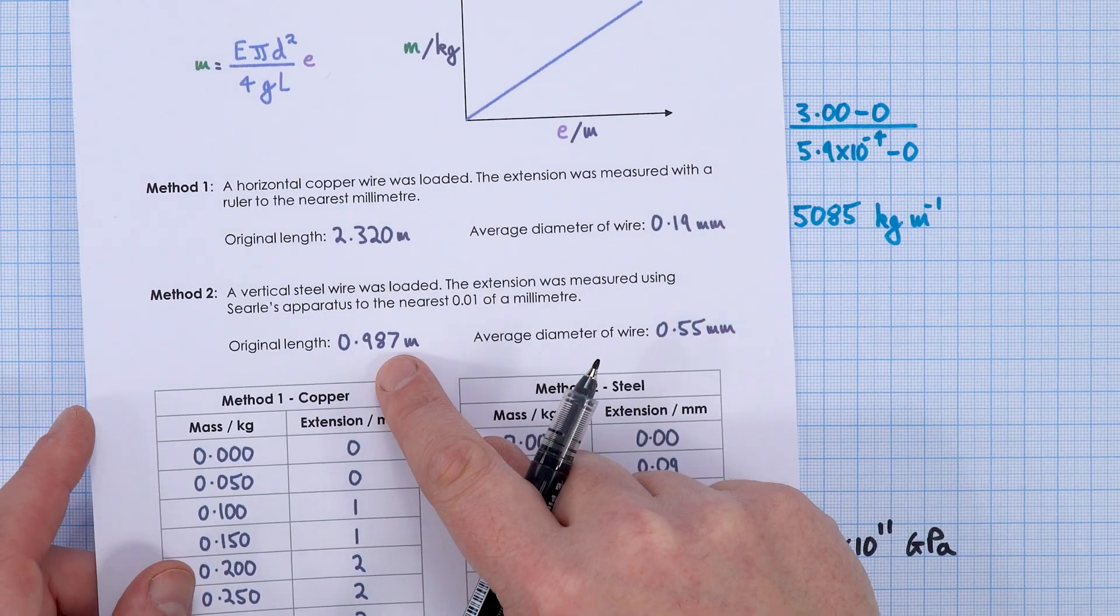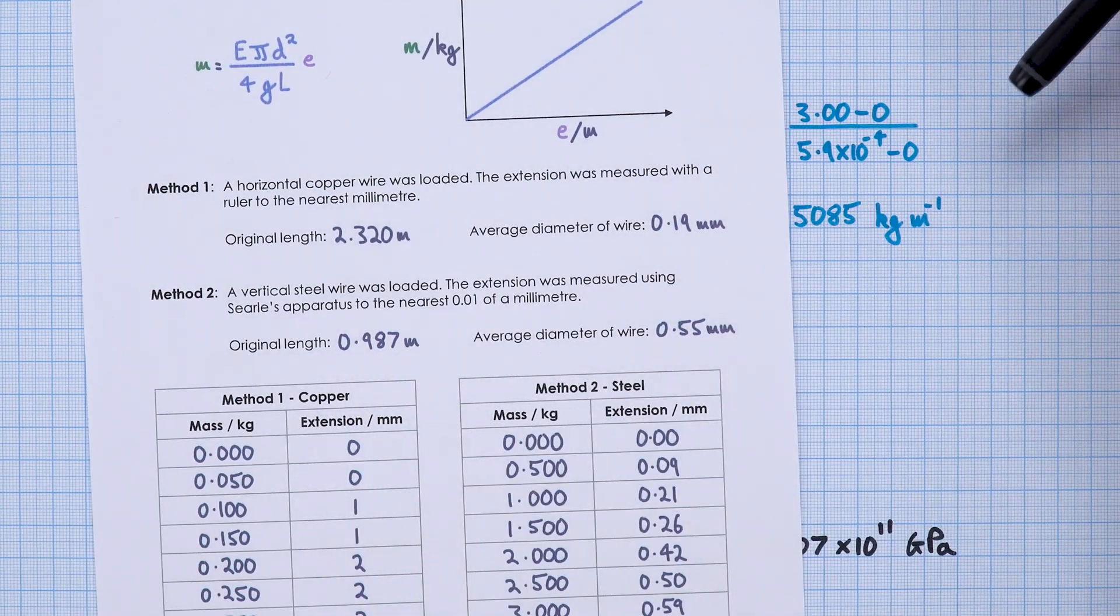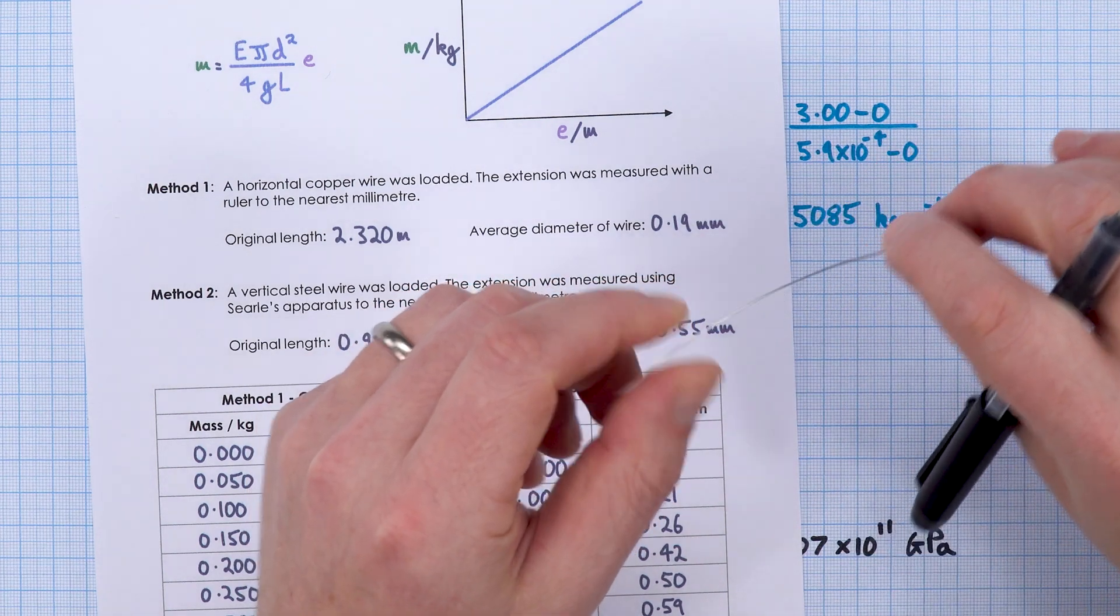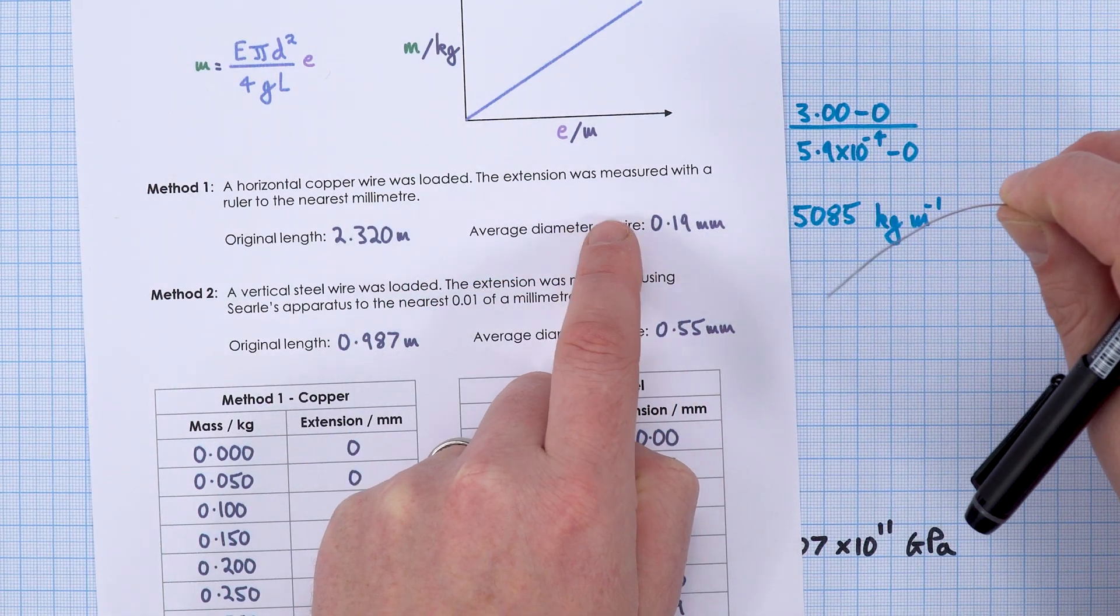This time, because it was hanging up from the ceiling, I couldn't get something over two meters long—it was actually just under a meter. The average diameter of this steel wire was 0.55 of a millimeter, so a lot thicker than the copper that we tested.